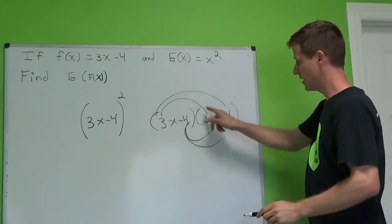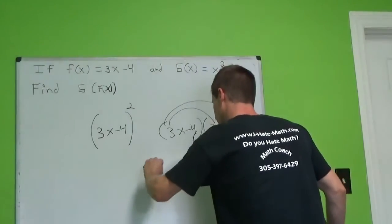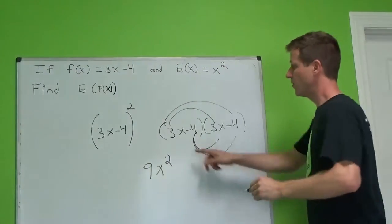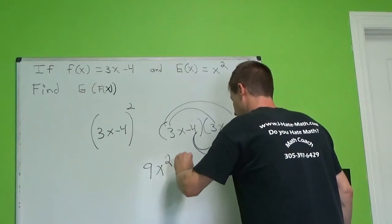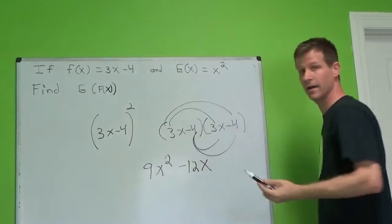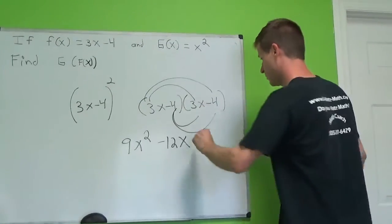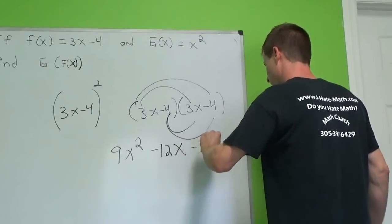So it's 3x times 3x is what? That's 9x squared. 3x times negative 4, positive negative is negative 12x. And again, negative 4 and 3x is what again? Negative 12x.